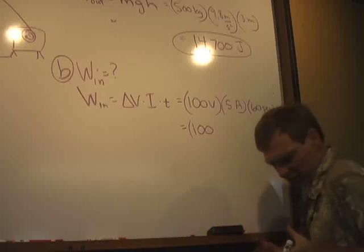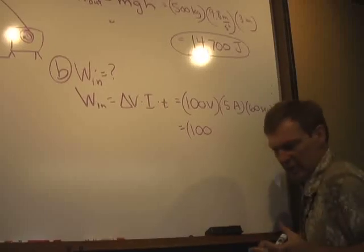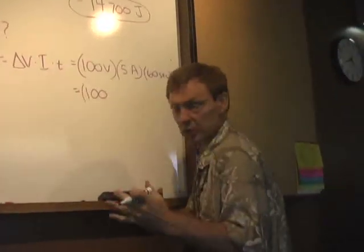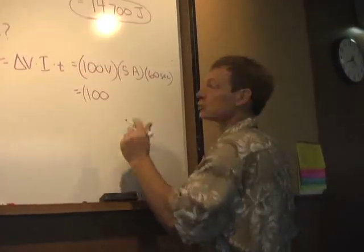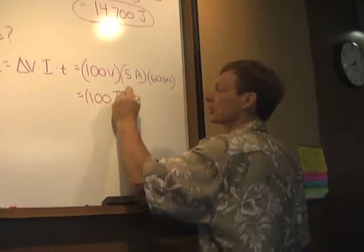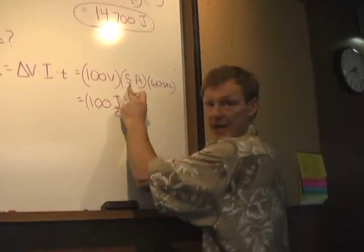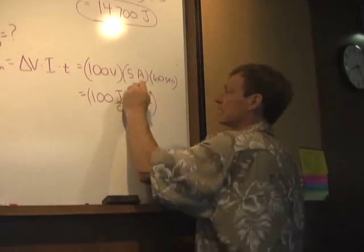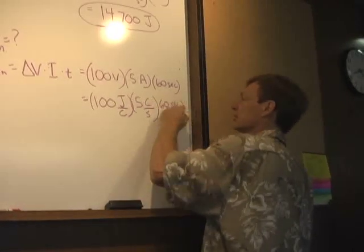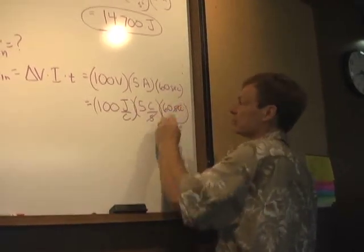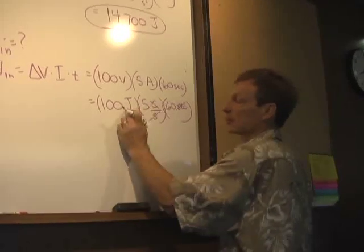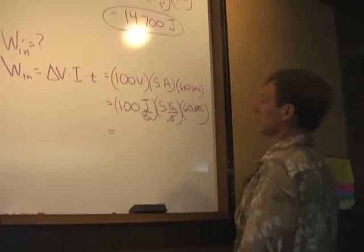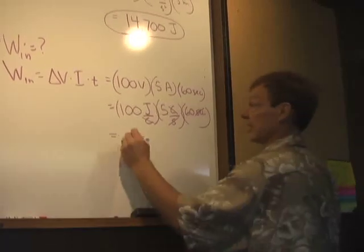A volt is the energy you give per charge. It's a joule per coulomb. So the more energy I give the charge, the faster they're going to scoot. So a volt is a joule per coulomb, so I'm going to call that 100 joules per coulomb. Now 5 amps. An amp's a coulomb per second, the rate at which the charge moves. And seconds, well, a second's a second. Notice that the seconds cancel and the coulombs cancel, and I'm left with units of work. I'm left with joules. And that's going to be 30,000.